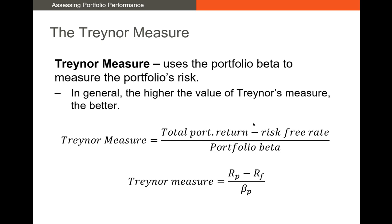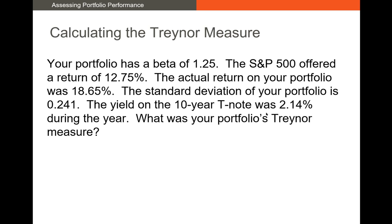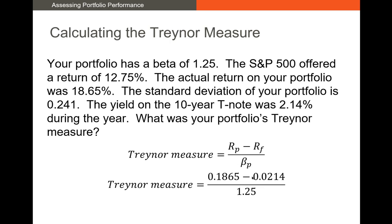The next measure is the Treynor measure. Just like the Sharpe ratio, higher is better. The only difference is in the denominator: we still have total portfolio return minus risk-free rate, but we divide by the beta of the portfolio rather than standard deviation. The Treynor measure is better in cases where the portfolio is well diversified, because once diversified we stop caring so much about total risk and focus primarily on market risk, best proxied by beta. Using our same example: (18.65% − 2.14%) ÷ 1.25 = 0.1321.